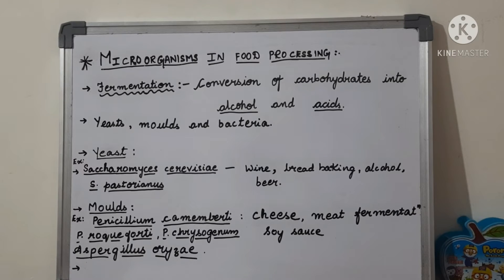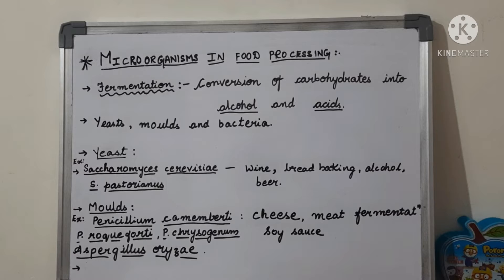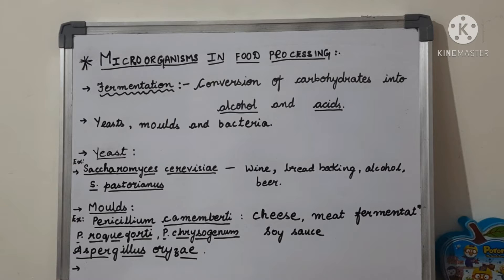Hello everyone, welcome back to my videos. Today's topic is microorganisms in food processing. Microorganisms have been extensively used in the production of certain useful food products, and this usefulness is based on a natural phenomenon carried out by microorganisms — fermentation. Fermentation is the natural ability of microorganisms to convert carbohydrates into alcohol or acids.